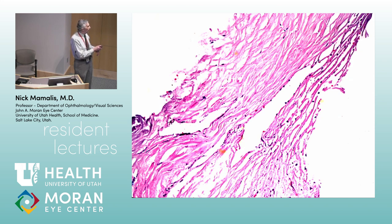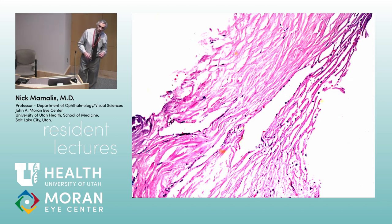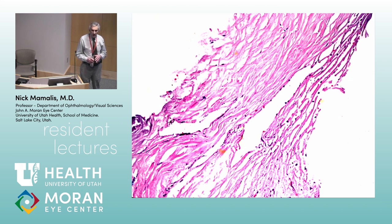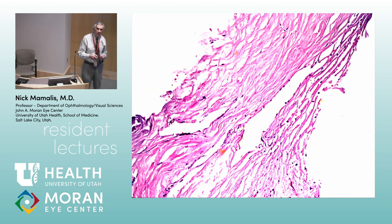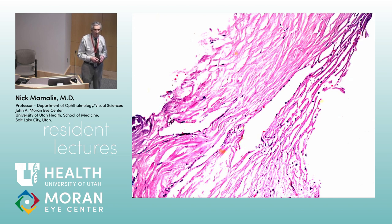Here's Schlemm's Canal, and here's an aqueous vein. Let's track aqueous. Where is aqueous made? In the ciliary body epithelium — more specifically, the non-pigmented epithelium. So the non-pigmented epithelium of the ciliary body produces aqueous. From there it flows forward around the pupil into the anterior chamber. Then into the aqueous vein network, into the juxtacanalicular system, into Schlemm's Canal, and then into the veins.